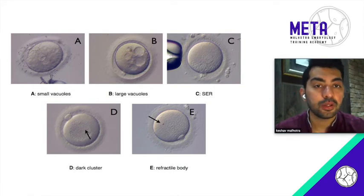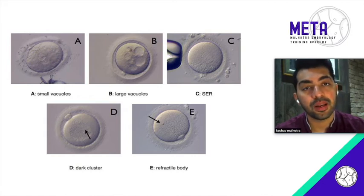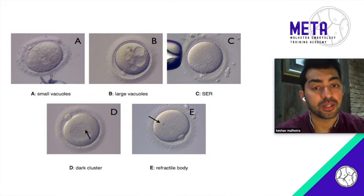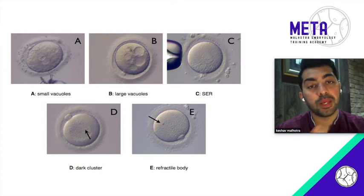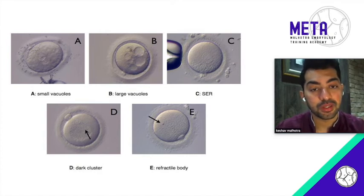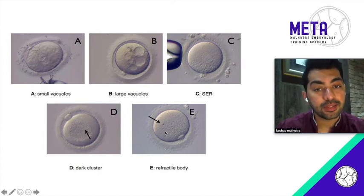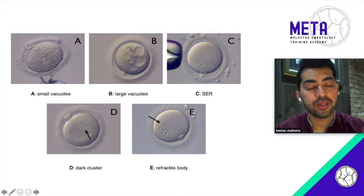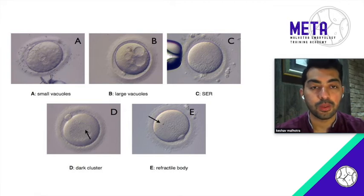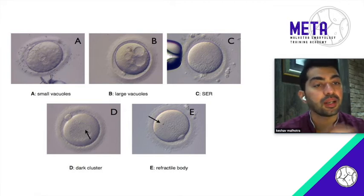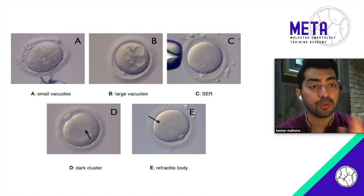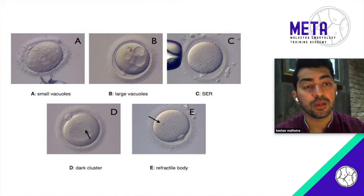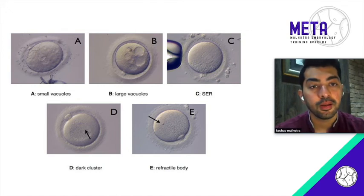SERs have been associated with a lower implantation rate and a higher miscarriage rate, so deprioritize embryos based on these features. Similarly, refractile bodies are also associated with lower implantation rates and higher miscarriage rates — so deprioritize your embryos based on these oocyte factors.